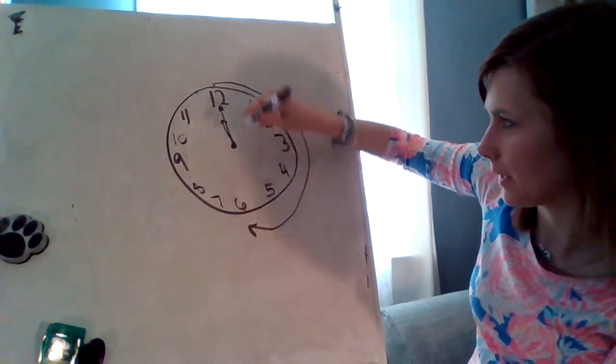Half past 11 — so halfway around the circle, it's going to be 11:30. Let's fill in our digital clock first. Now our minute hand — our big hand — needs to be pointing down at the 6, and the hour hand has to go in between the 11 and 12.